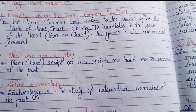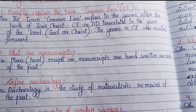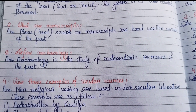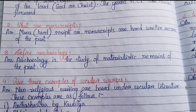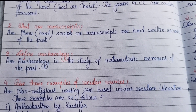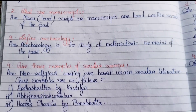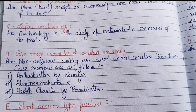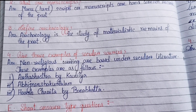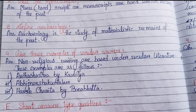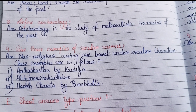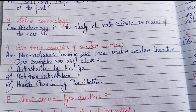Number two: what are manuscripts? Manuscripts — 'manu' means hand — manuscripts are handwritten records of the past. Number three: define archaeology. Archaeology is the study of materialistic remains of the past.